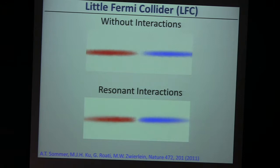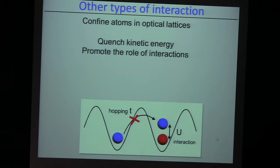With strong interactions, these atoms collide at every encounter, so for the red guys to go through the blue cloud, it needs an incredible number of collisions. It's much easier to just bounce back ballistically and stay on the side where they are.